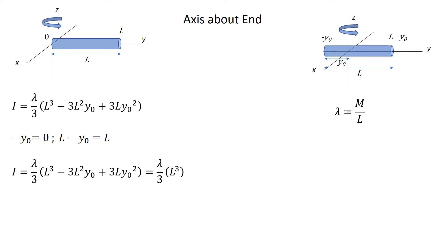Because I've defined lambda to be m over L, I can make that substitution, and cancelling out a power of L, we are left with 1 third mL squared. And that is the moment of inertia of a rod rotating about its end.